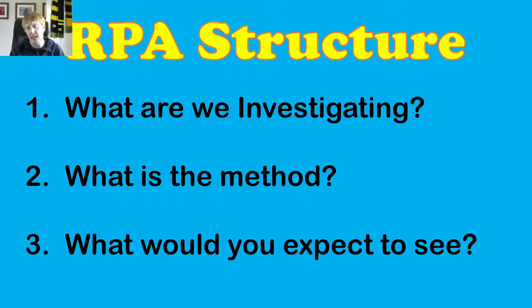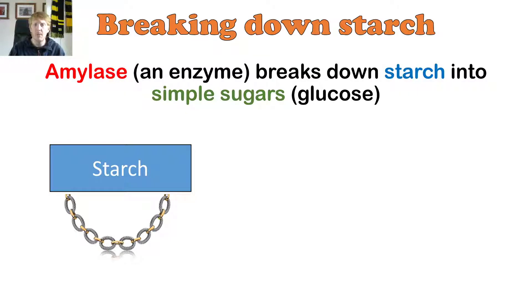But before we get into those, we need to understand some core underlying science. Number one, the things we need to know, is we need to know that amylase is an enzyme, and amylase will break down starch into simple sugars, which are glucose. You can see starch over there on the left. It's kind of like that necklace, lots of small links joined together.